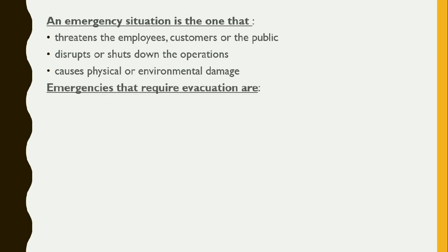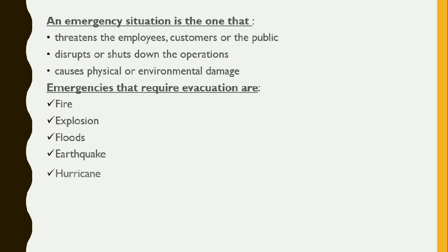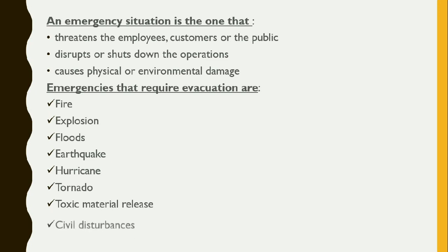There are some types of emergencies that require evacuation — that is, we need to move out when they happen. These include fire, explosions such as bomb blasts or chemical explosions, floods, earthquakes, hurricanes, tornadoes, and toxic material release. For example, recently there was a case of styrene gas release in a factory in Visakhapatnam. These emergencies require us to move from that place immediately.